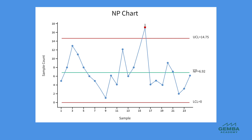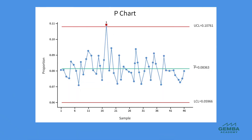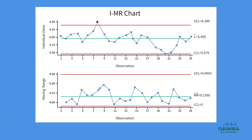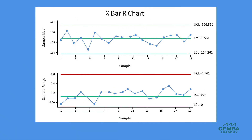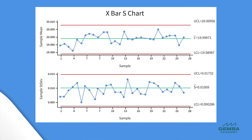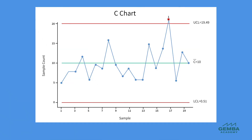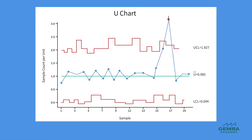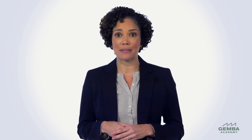Moreover, the use of different types of control charts tailored to the nature of the data and the specific insights required — for example, the mean, range, proportion, or count — allows for a nuanced analysis of process performance. We can use statistical process control to monitor, maintain, and manage process performance.